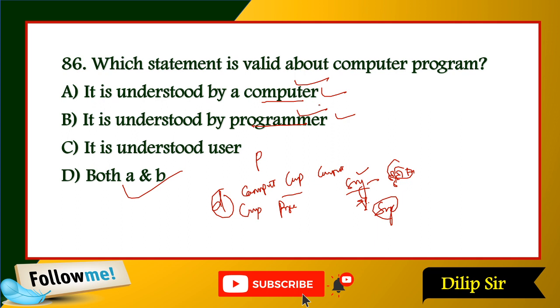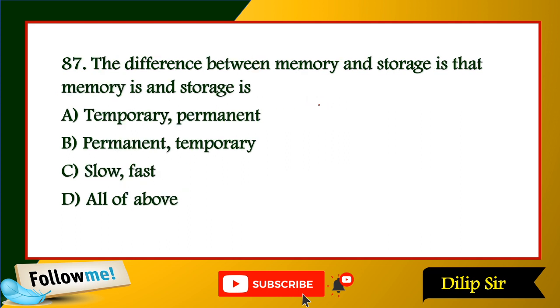The difference between memory and storage is that memory is temporary and storage is permanent; memory is fast and storage is slow — all of the above.